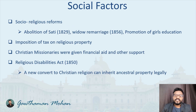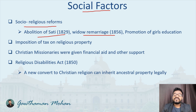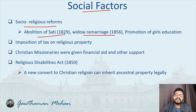Now, what are the social factors that led to the 1857 revolt? The first is socio-religious reforms. Indians were following certain traditions, customs, and age-old religious practices. The British suddenly introduced certain reforms into society — one such reform was the abolition of Sati in 1829, widow remarriage in 1856, and the promotion of girls' education. All these were not acceptable to many people at the time, as they considered these activities as interference in their culture and religious traditions.